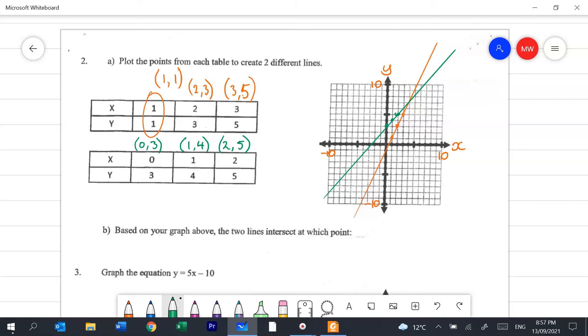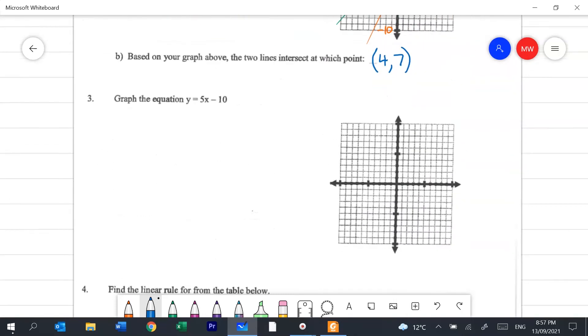And the question of this is, based on your graph, the two lines intersect at what point? Where would they intersect here on my graph? I should make that a different colour. I'll make that blue. So I can see that that's at the point 4, 7. So I'm going to say that they intersect at 4, 7. And in years to come, this will be called simultaneous equations. So you might learn about this next year or in year 10. Moving on.